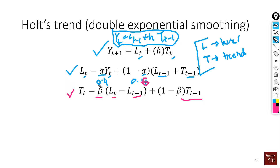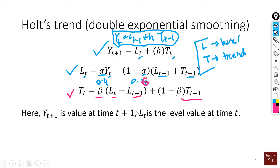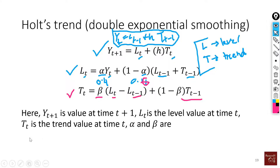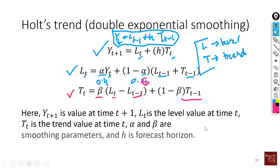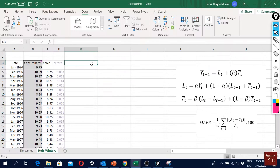For the trend calculation we focus on the difference between two levels, while for the level we weight the real time series value and also take the summation of the previous level and trend. Here ŷ(t+1) is the forecast, L(t) is the level, T(t) is the trend, alpha and beta are smoothing parameters between zero and one, and h is the forecast horizon — used only for out-of-sample forecasting, not training sample forecasting.